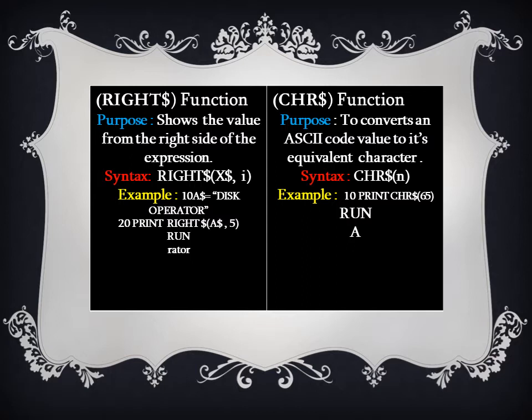Next is the right$ function. The right$ function returns the selected part from the right side of an expression and shows it on our output screen. Its syntax is: right$(x$, i), where x$ is the variable name and i is the limit. In the example, on line 10, a$ = 'disk operator'. On line 20, we print right$(a$, 5). When this program runs, it shows the 5 characters from the right side of the value stored in variable a$.